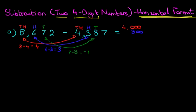I'm not going to add that on just yet. Let's just do the units as well. For the units, we've got 2 - 7. Now again, this is a negative number. 2 - 7 is minus 5.